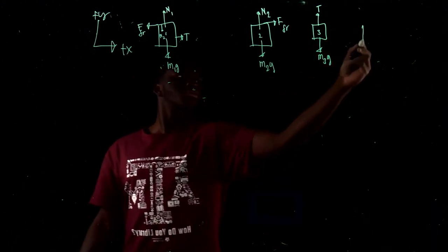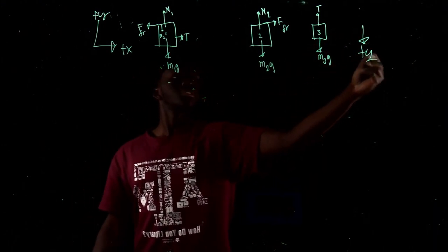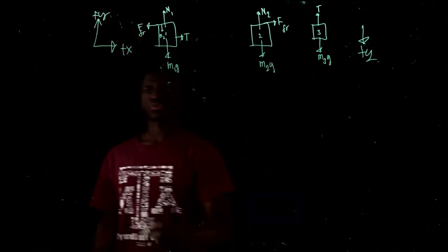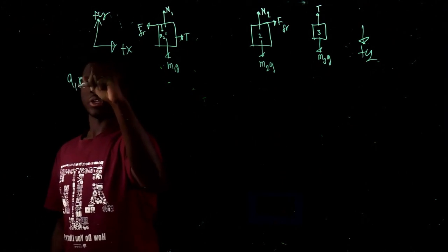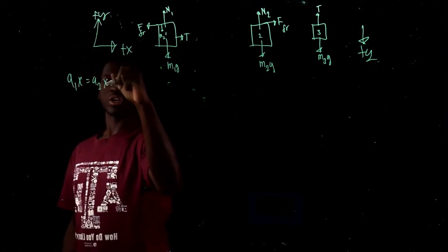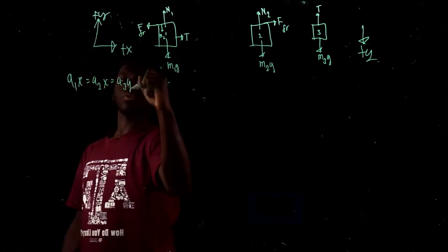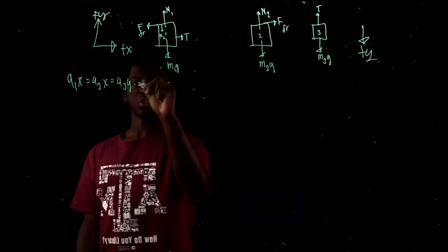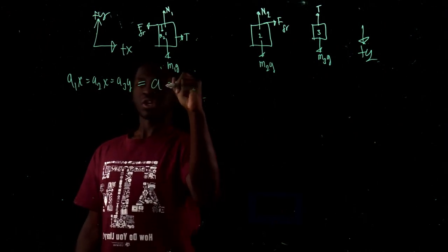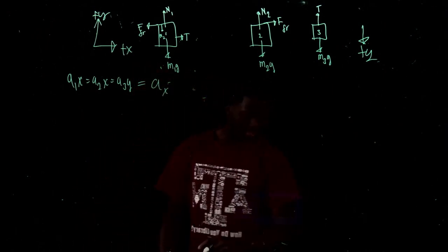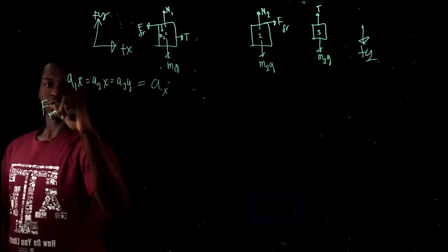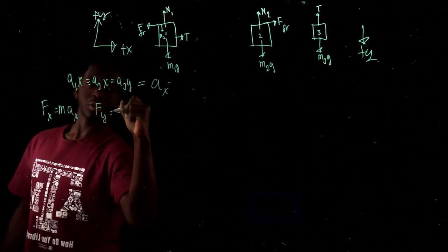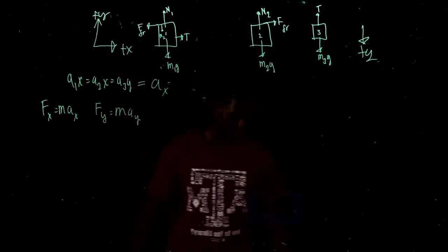Since we have all that, let's write the general equations. A1X is equal to A2X, which is equal to A3Y, only because they're all part of the same massless, unstretchable string. We're going to name all this AX. So: FX equals MAX, FY equals MAY.